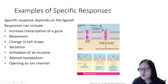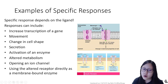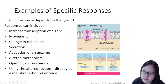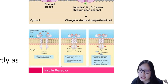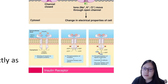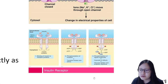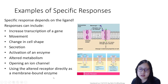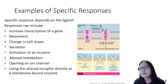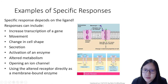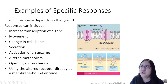You can also use the receptor directly as a membrane-bound enzyme, as with the insulin receptor. When the hormone/ligand binds, it causes a change in shape that gives the receptor enzyme function — so it performs an enzymatic role upon binding. This really depends on the specific ligand and what the body needs.